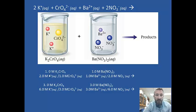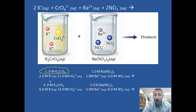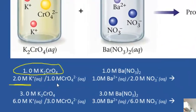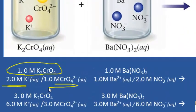For example, if we have 1 molar potassium chromate, when that dissolved there would actually be 2 molar potassium and 1 molar chromate, because for every 1 potassium chromate you get 2 potassium ions and 1 chromate ion. Similarly, if we had 1 molar barium nitrate, when that dissolved we'd get 1 molar barium ions and 2 molar nitrate ions.